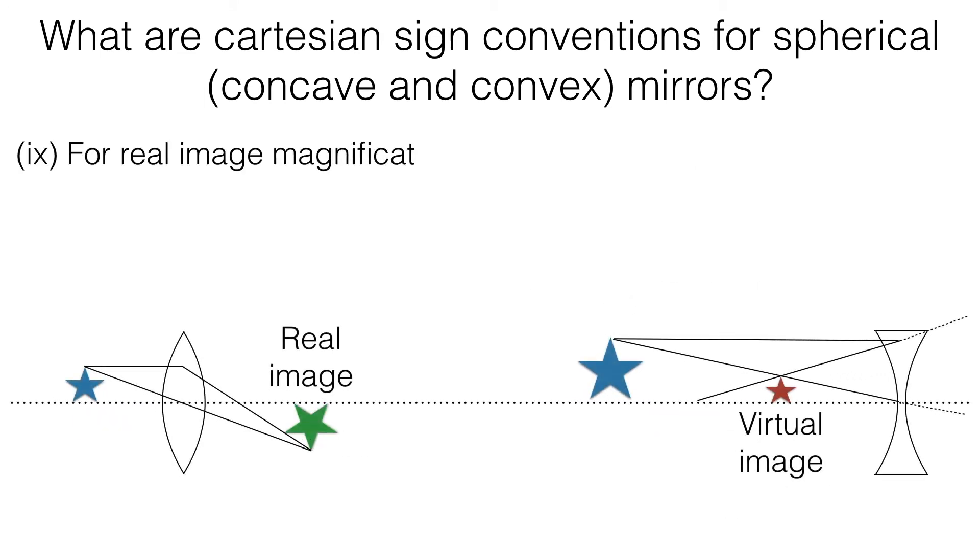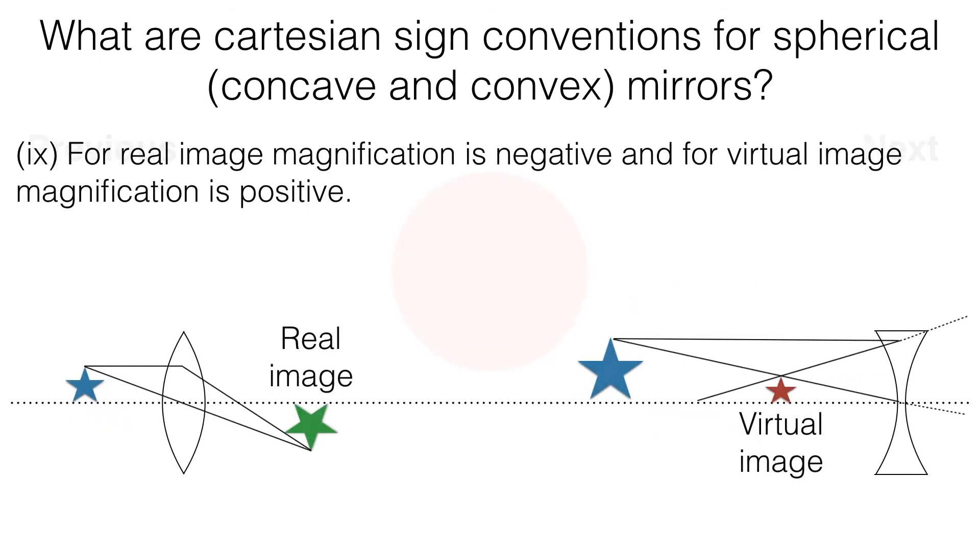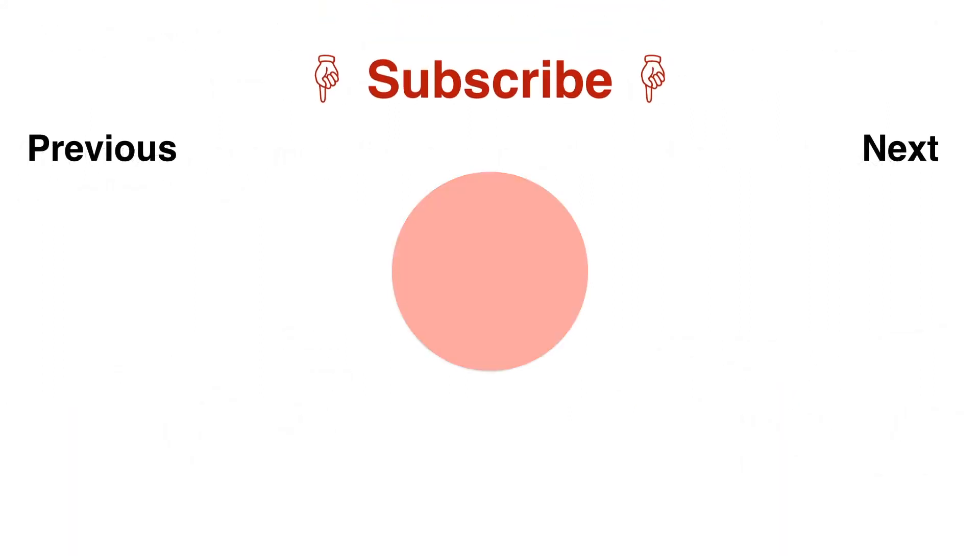For real image, magnification is negative and for virtual image, magnification is positive.